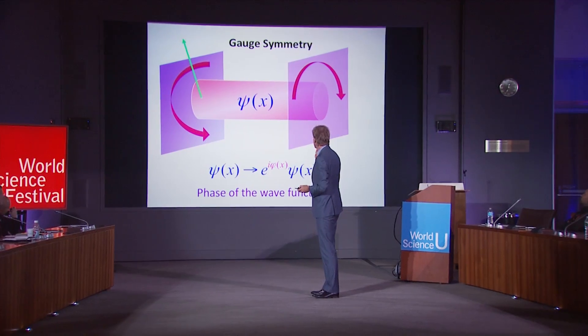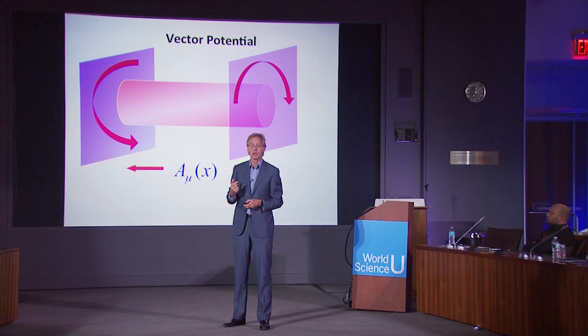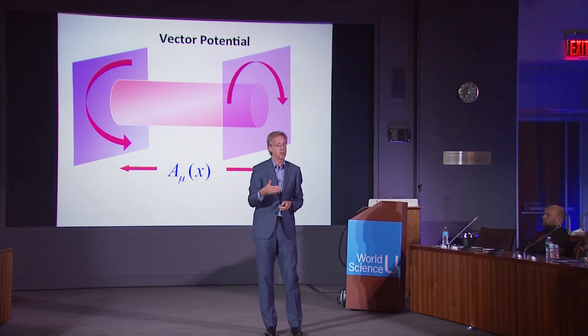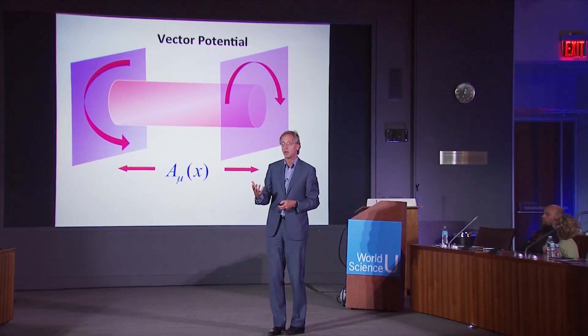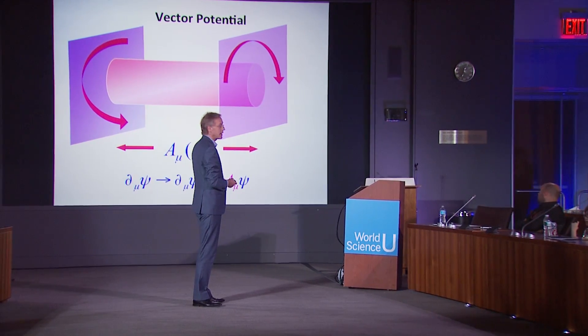You rotate a piece of the wave function here, and rotate there in another way. To do this, you need a compensating field — what mathematicians would call a connection, but what in physics is called a vector potential. It's the vector potential underlying electromagnetism. The modern point of view of electromagnetism — of light interacting with matter — all comes down to this particular symmetry. It's the symmetry of nature, and by implementing this symmetry you get a field: the electromagnetic field.